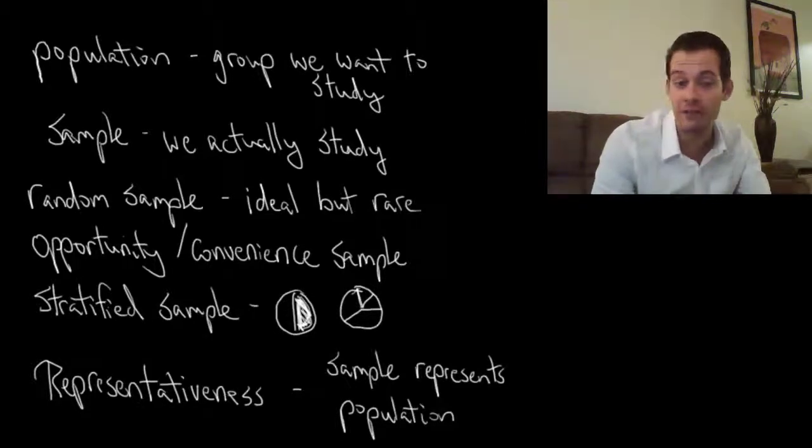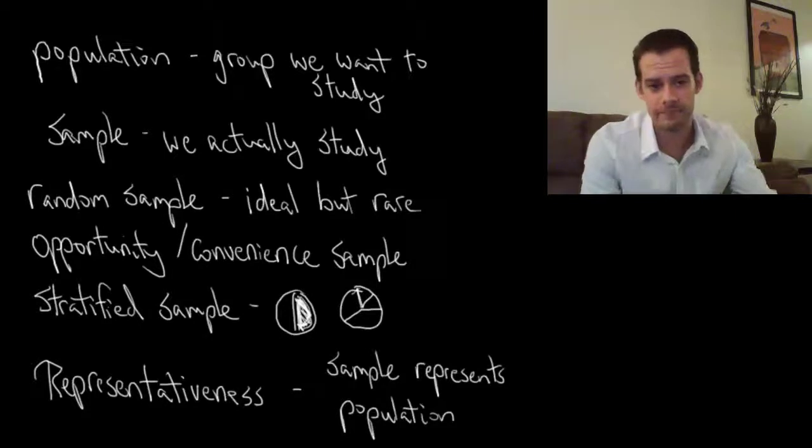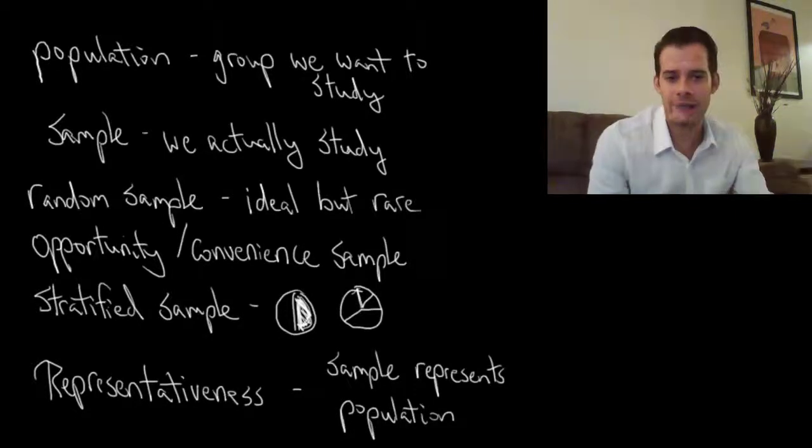College students are different from the rest of the population in certain ways and that might matter. So they tend to be younger than average, they tend to be better educated than average, they tend to be wealthier than average. And these traits might be influencing the results that we're getting. So often we have non-representative samples.